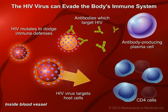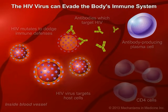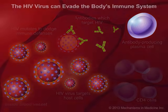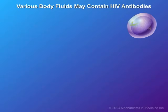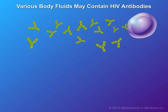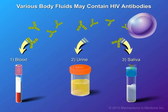With the ability to avoid the body's immune system, the HIV virus can keep replicating, resulting in an infection that is chronic and long-term. From the time you are first infected with the virus, your body normally takes a few weeks to produce antibodies against HIV. These HIV antibodies can be found in various body fluids, such as blood, urine, and saliva.